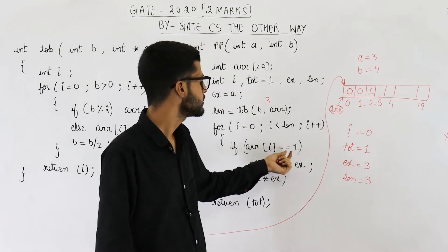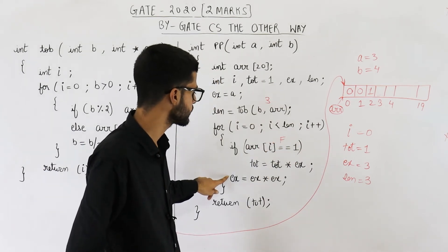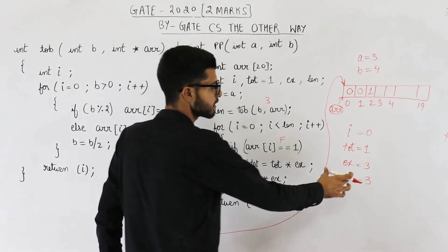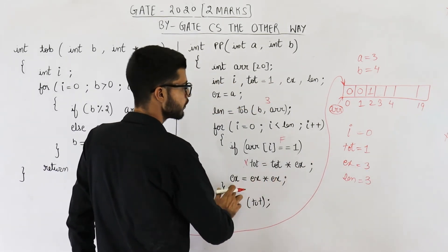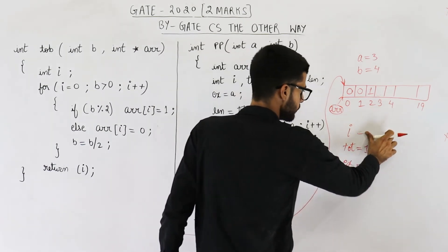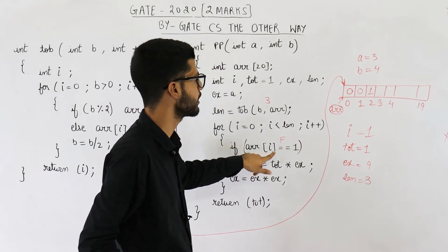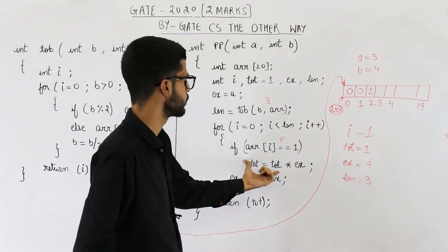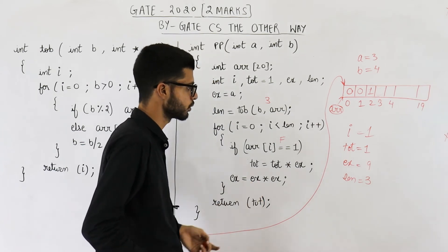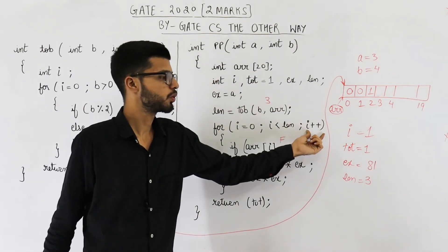arr[0] is 0, so 0 == 1 is false. We skip the if statement and just update ex: ex = ex * ex = 3 * 3 = 9. In the next iteration i = 1; 1 < 3 is true. arr[1] is 0, so the condition is false again. ex = ex * ex = 9 * 9 = 81.